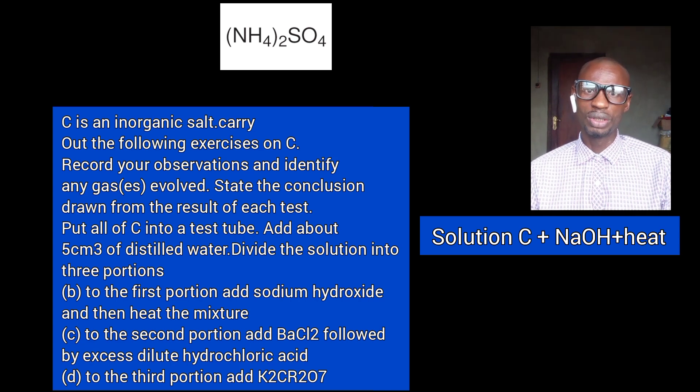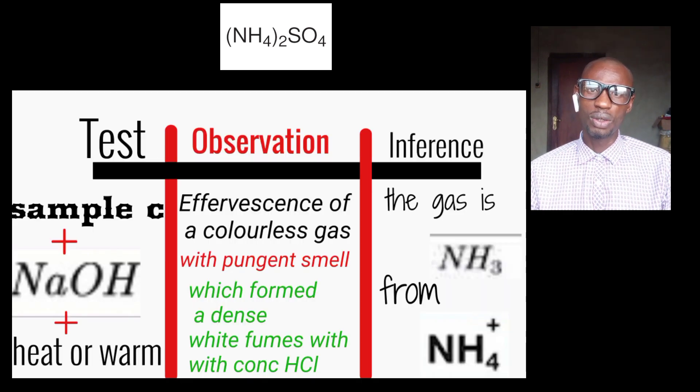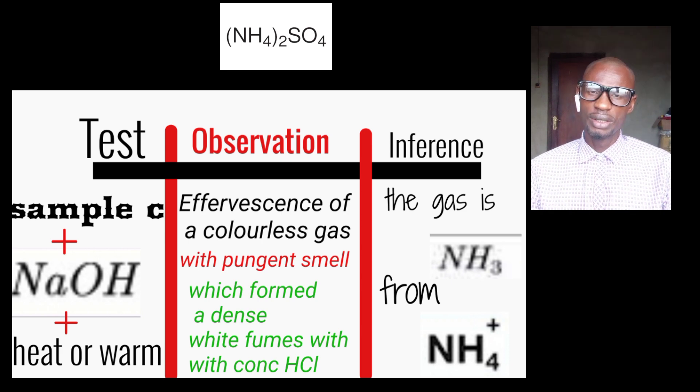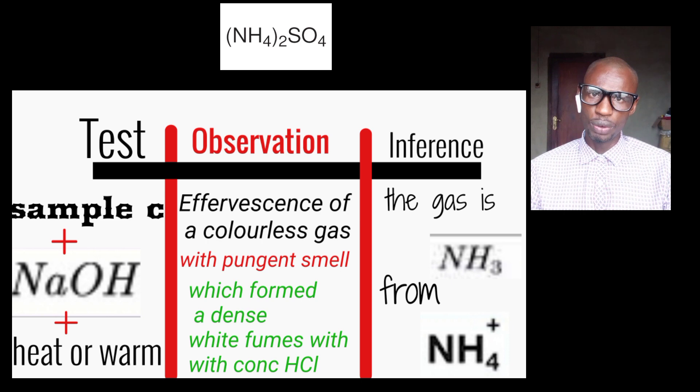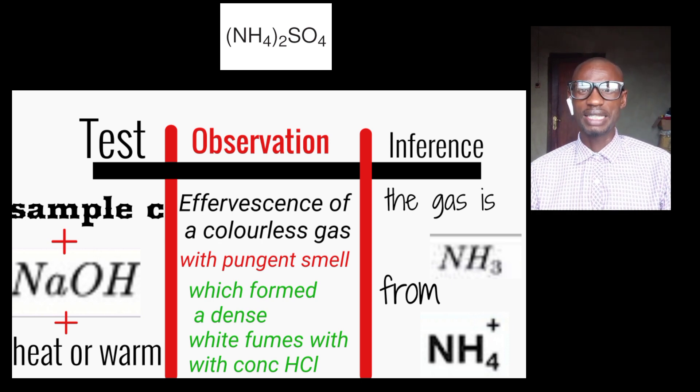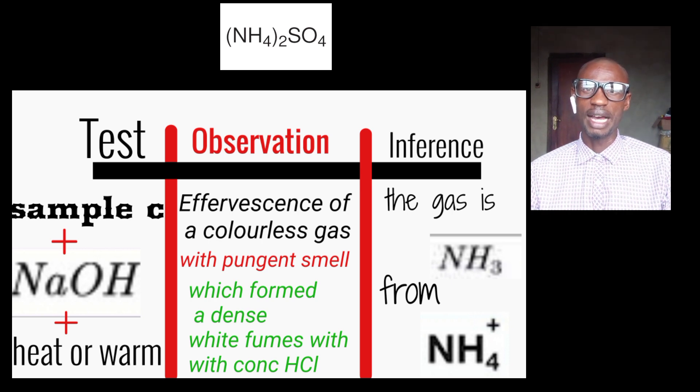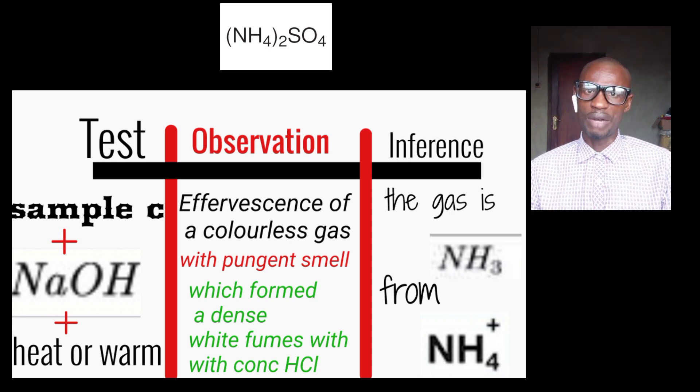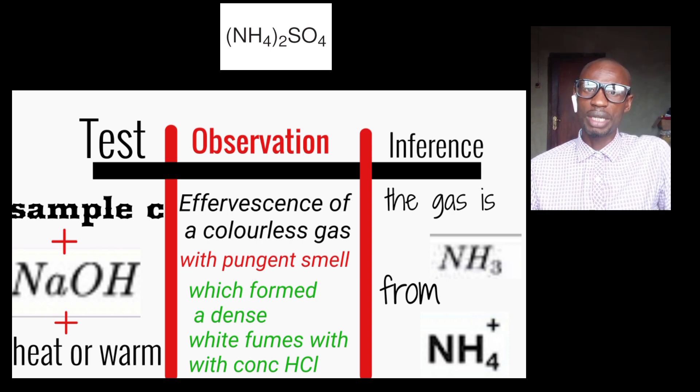So at your observation, you are expected to write evolution of a colourless gas with a choking smell. That is one mark. That is the physical properties of a gas which turns red litmus paper blue and also forms a dense white fume with concentrated hydrochloric acid. That is the chemical properties, and the gas I have been describing is ammonia gas. It is ammonia gas that has a choking smell and also forms a dense white fume with hydrochloric acid. And at the inference, ammonia gas from ammonium ion. Ammonia gas is one mark. Confirming ammonium ion is another one mark. The physical properties of the gas, one mark, and the chemical properties of the gas, another one mark.